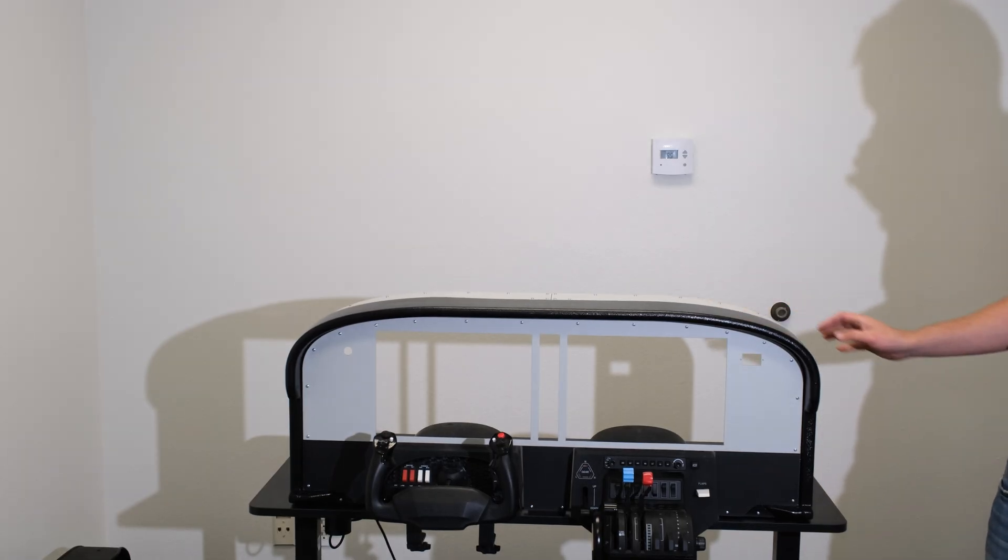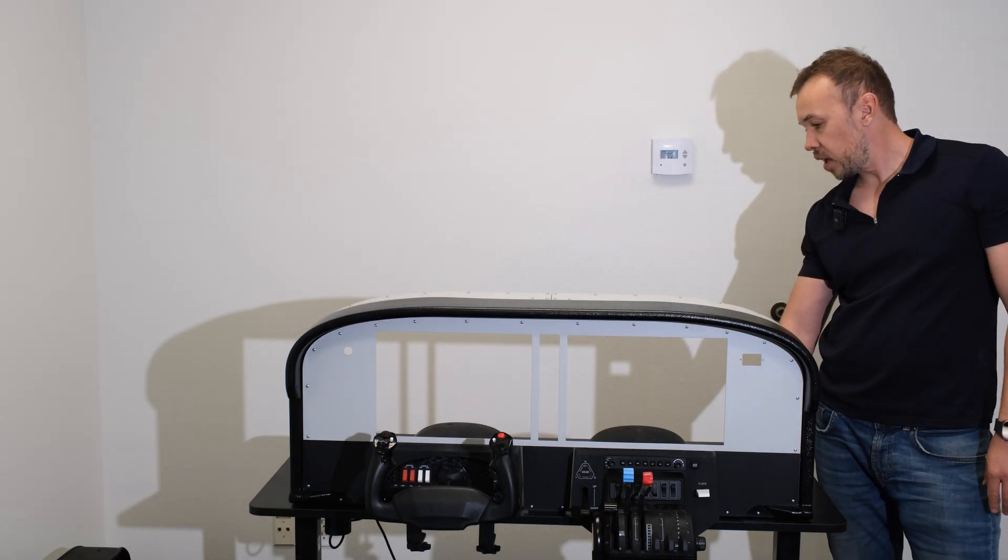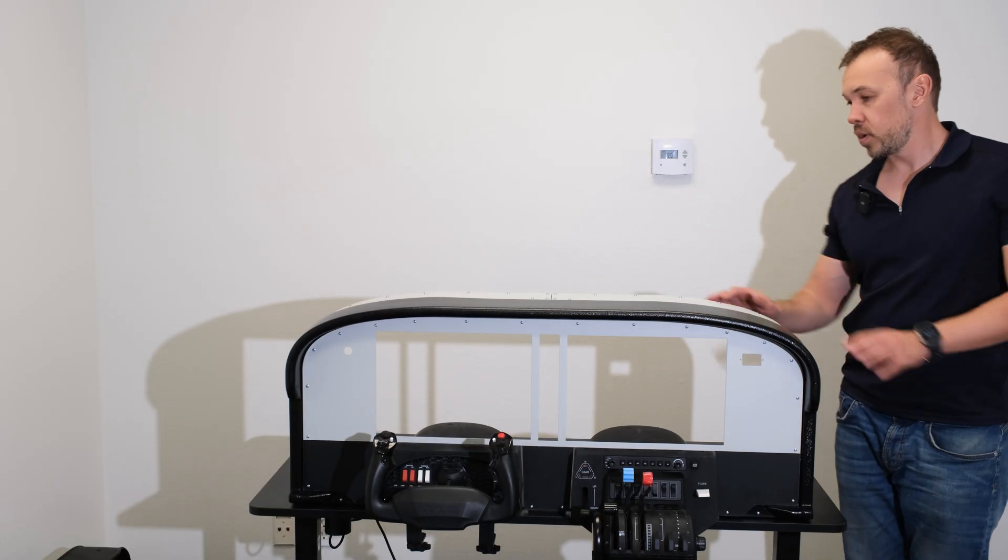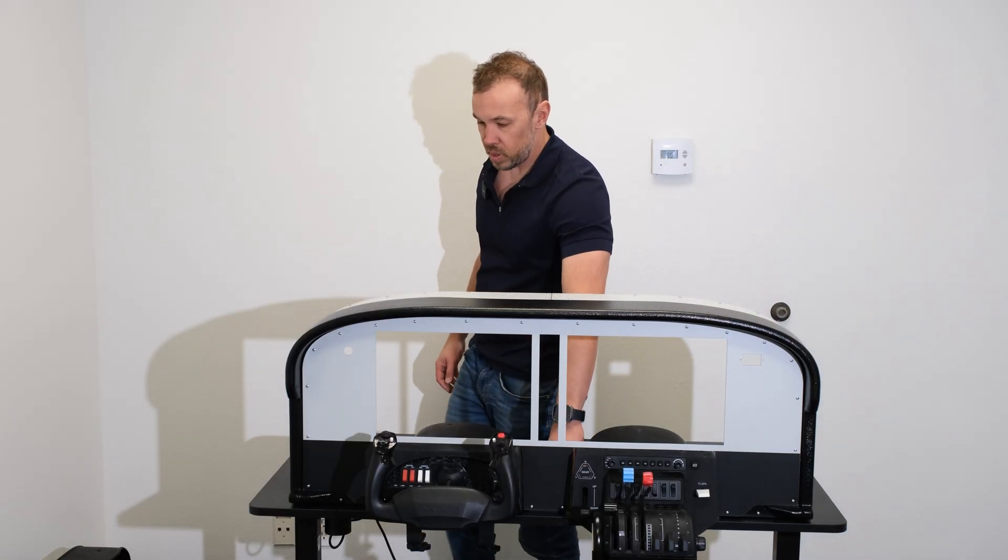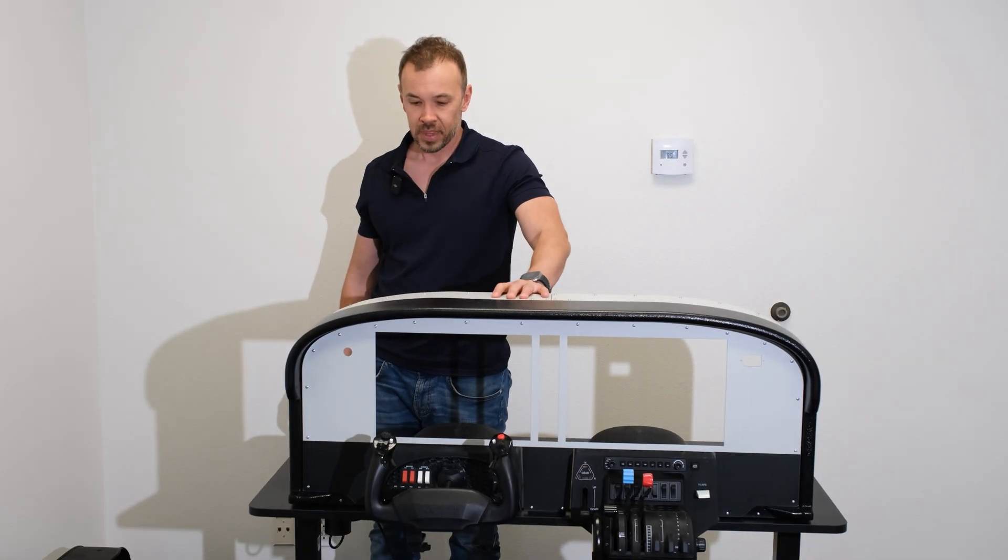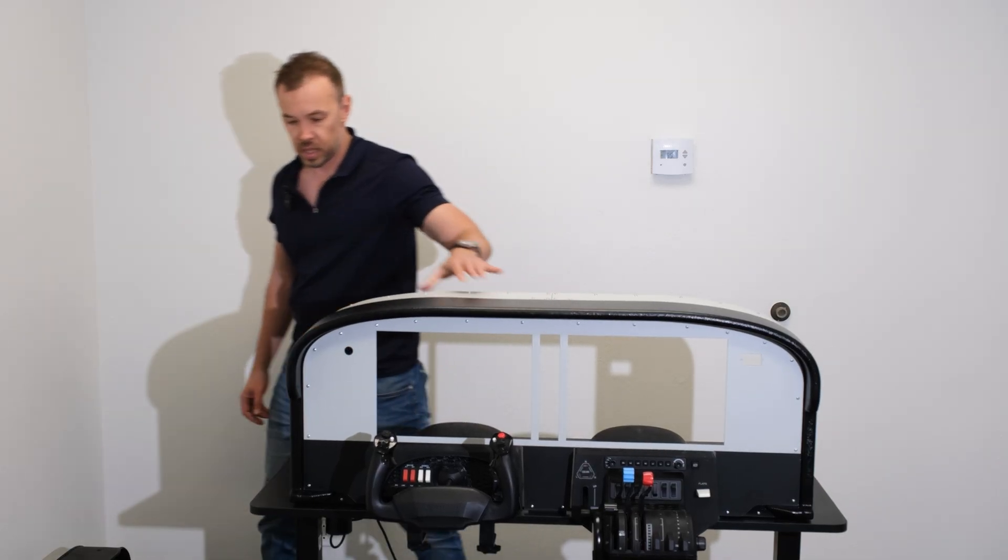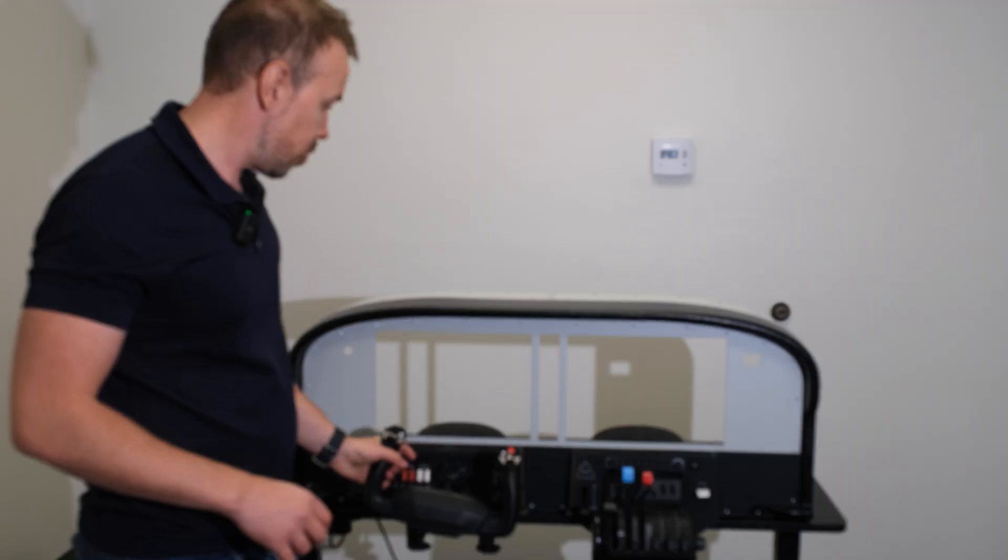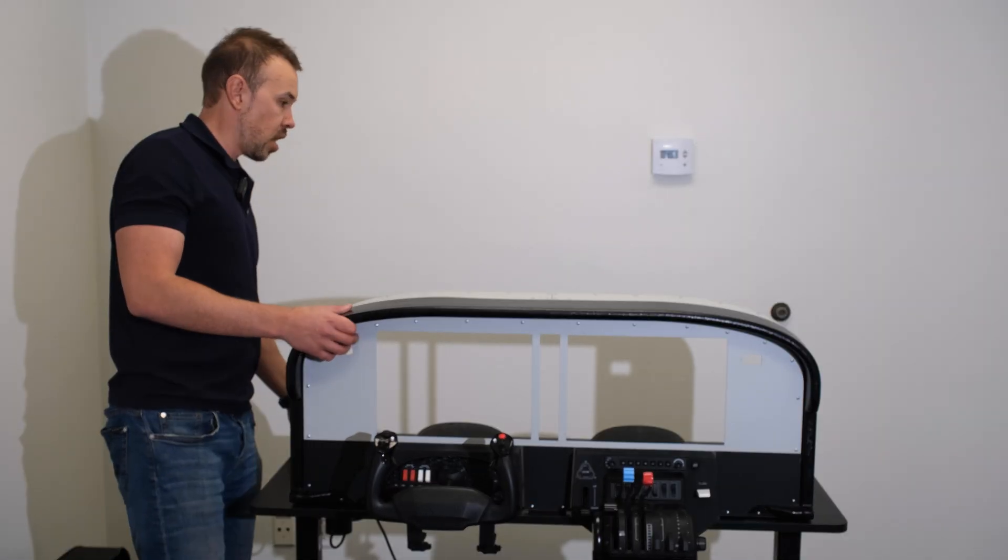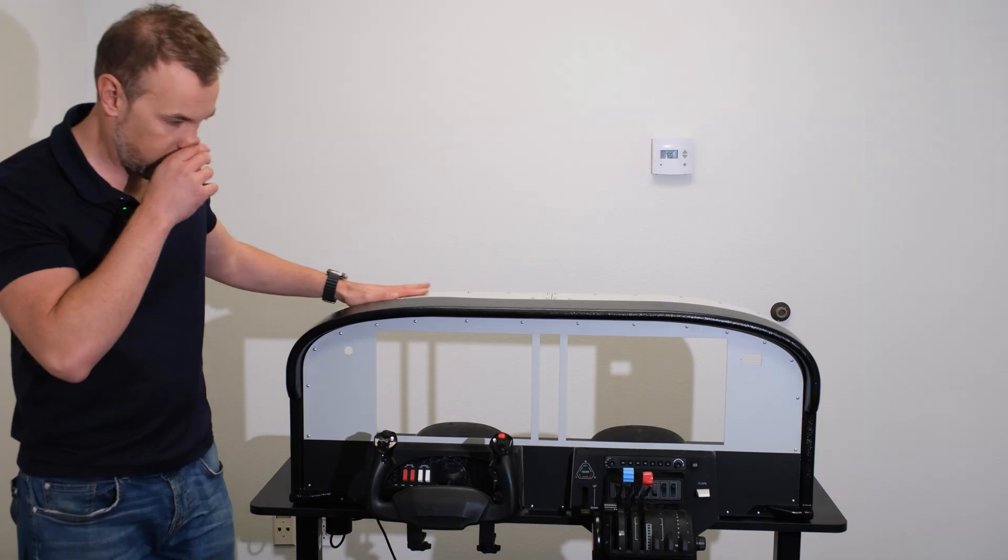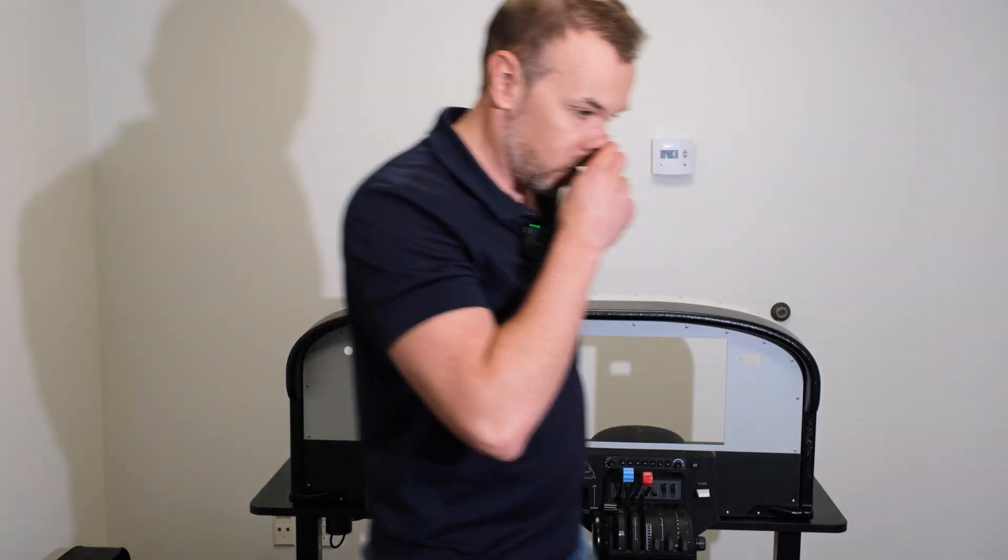So again, once you're kind of comfortable with where you're going to have your panel, I would screw it to the table so it's all secure. But to be honest, it's pretty good. For me, for example, that's again, because you're pushing it from here, just want to make sure that the table is stable. It's all good. So next thing, we're going to take our Flight Sim Builder G1000 panels.